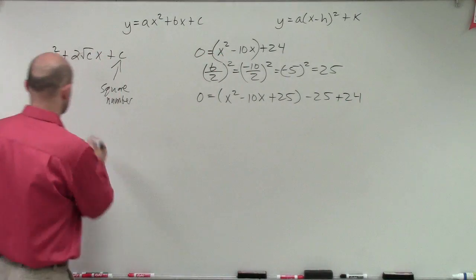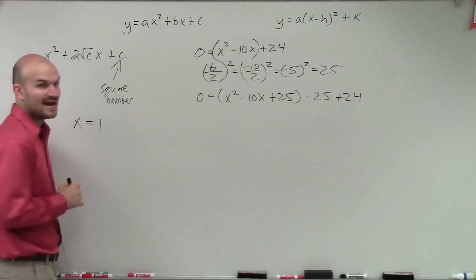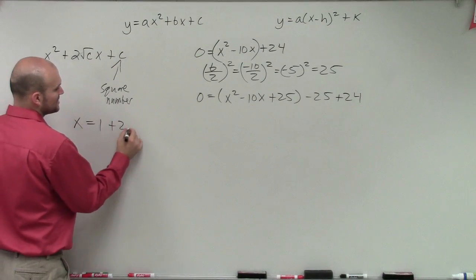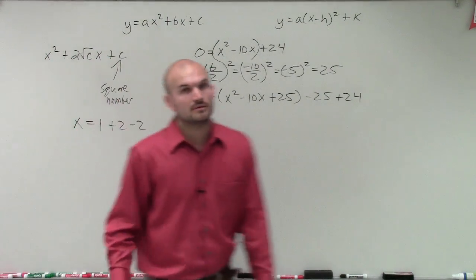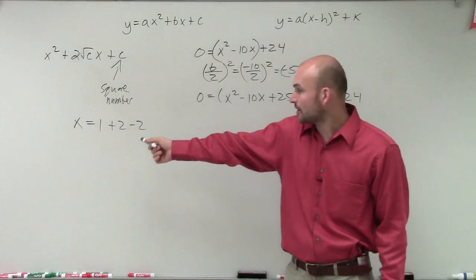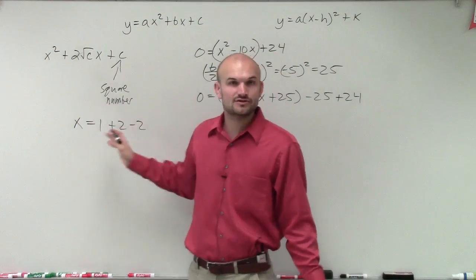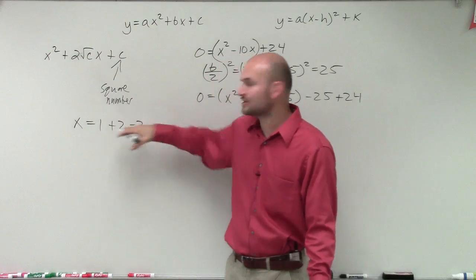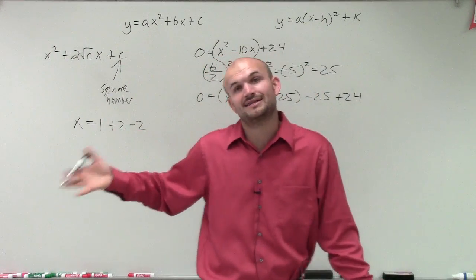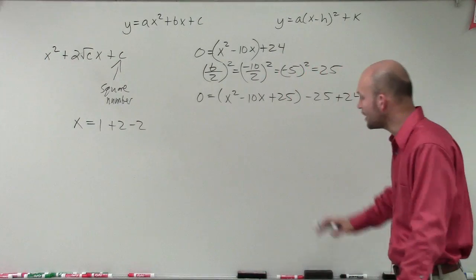So 0 equals parentheses x squared minus 10x plus 25 minus 25 plus 24. And just real quick, a lot of students have trouble with it. If I say x equals 1 and then I say plus 2 minus 2, I didn't change that answer at all just by adding 2 and subtract 2. Since I did it on the same side, my solution is still true. x still equals that 1 because those plus 2 minus 2 still goes to 0.